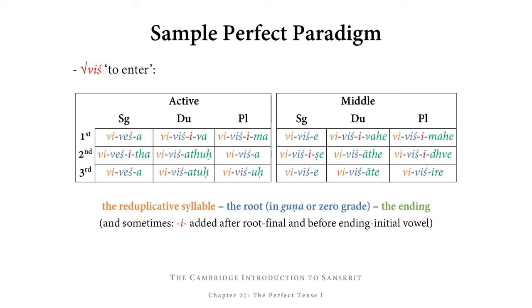So as you can see, we have a new set of endings: a, itha, a for the singular; va, athuḥ, atuḥ for the dual; and ma, a, uḥ for the plural — a set of endings we need to memorize.